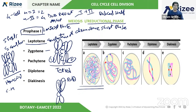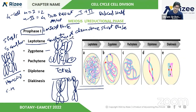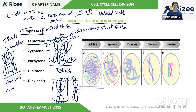In the zygotene stage, homologous chromosomes come together. The two chromatids of the same chromosome are called sister chromatids, while chromatids from different homologous chromosomes are called non-sister chromatids. So in the zygotene stage, pairing of homologous chromosomes occurs.